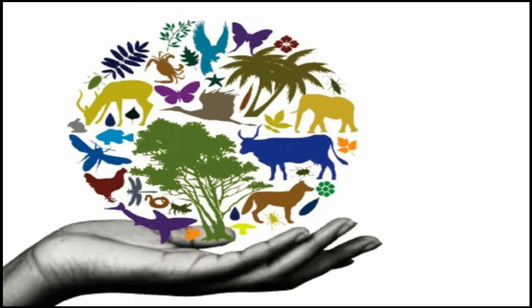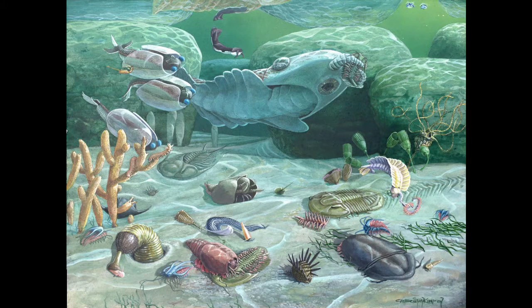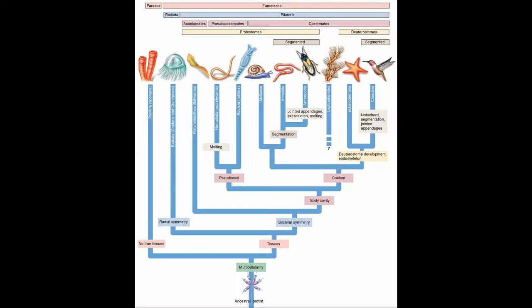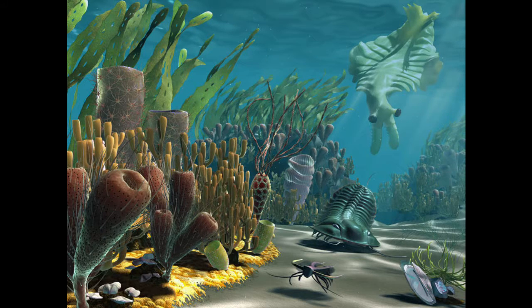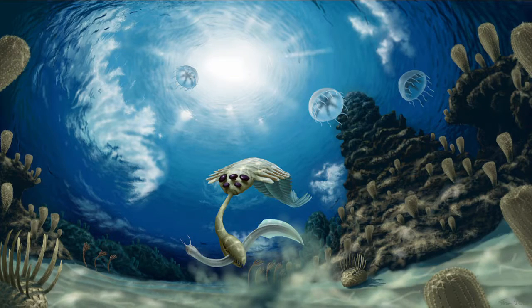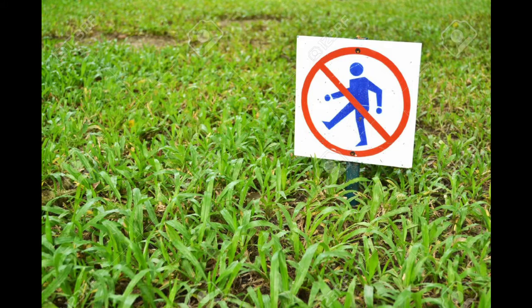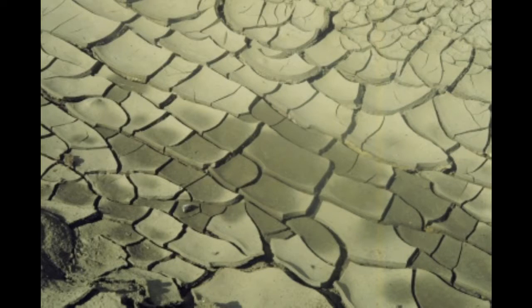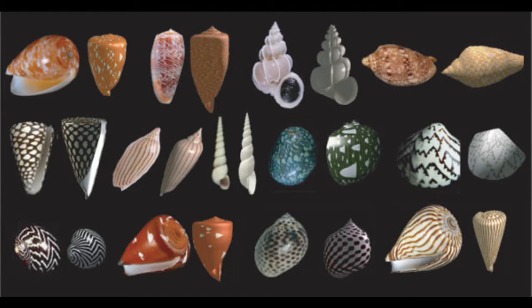This rapid growth in the variety of life on Earth is often referred to as the Cambrian Explosion, because it produced the first creatures of all modern animal phyla, which can all be traced back to a single common ancestor. The majority of this complex life, however, lived in the ocean.